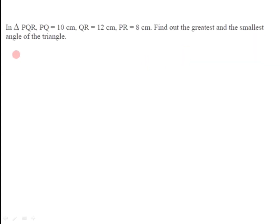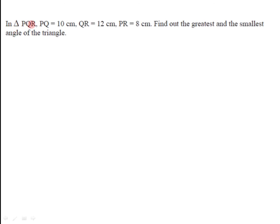Let us have the next question. In triangle PQR, the length of segment PQ is 10 cm, length of segment QR is 12 cm, and PR is equal to 8 cm. Find out the greatest and the smallest angles of the triangle. We have to use the property of inequalities of sides and angles of a triangle.